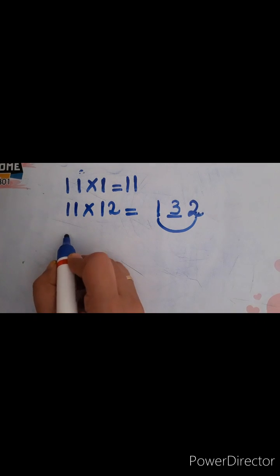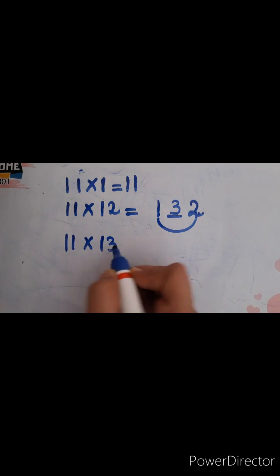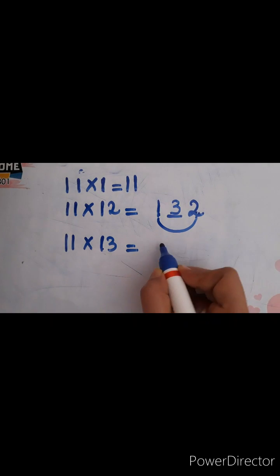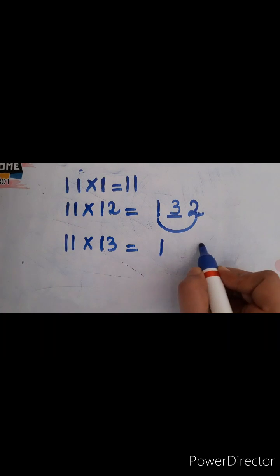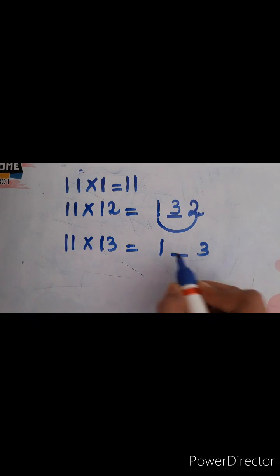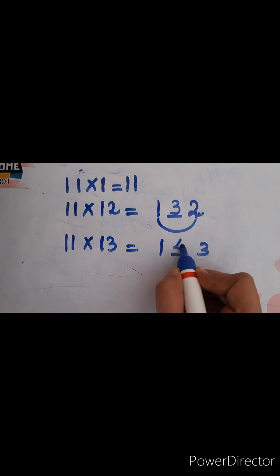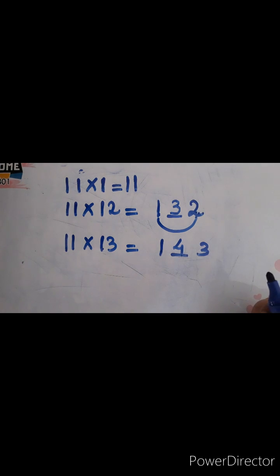I will show you one more example: 11 into 13. You are going to write 13 like this, put a small gap in between. What is 1 plus 3? Gives you 4. You are going to write 4 in between the 13. So your answer is 143. I hope it is clear for you.